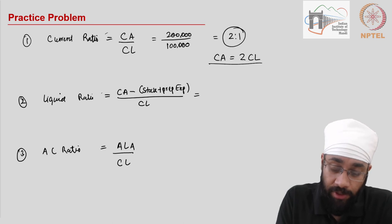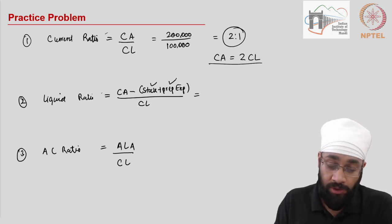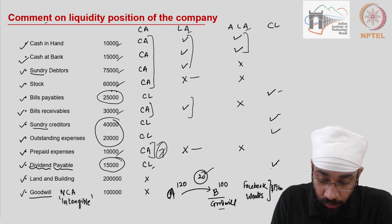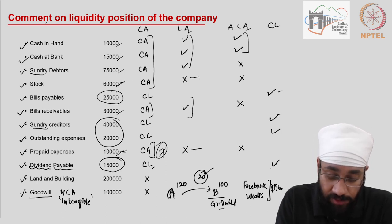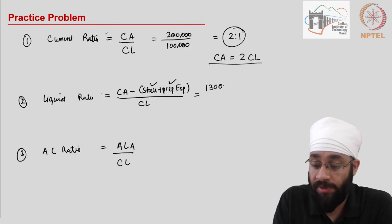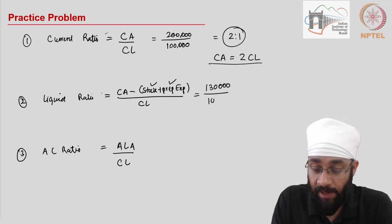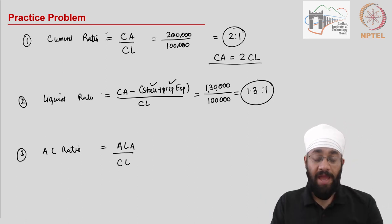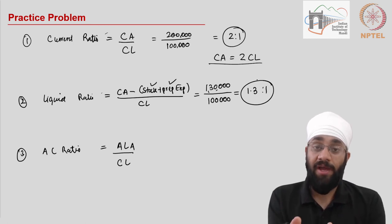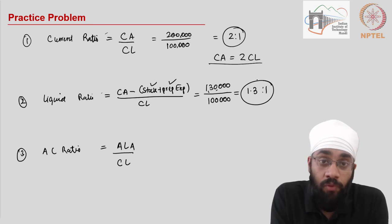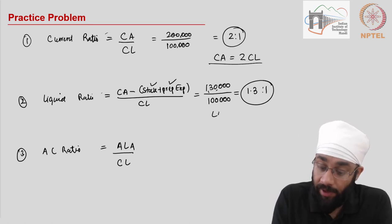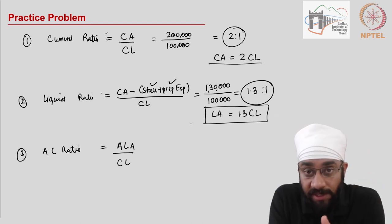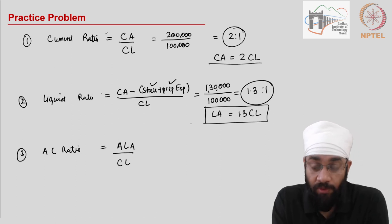For the liquid ratio, stock and prepaid expenses are excluded. Removing 10,000 and 60,000 — totaling 70,000 — from the current assets of 2 lakhs gives liquid assets of 1,30,000. Dividing by current liabilities of 1 lakh gives a liquid ratio of 1.3:1. This means even after ruling out stock and prepaid expenses, the liquid assets are 1.3 times the current liabilities, so the company can afford to lose 30% of its liquid assets and still pay off current liabilities.